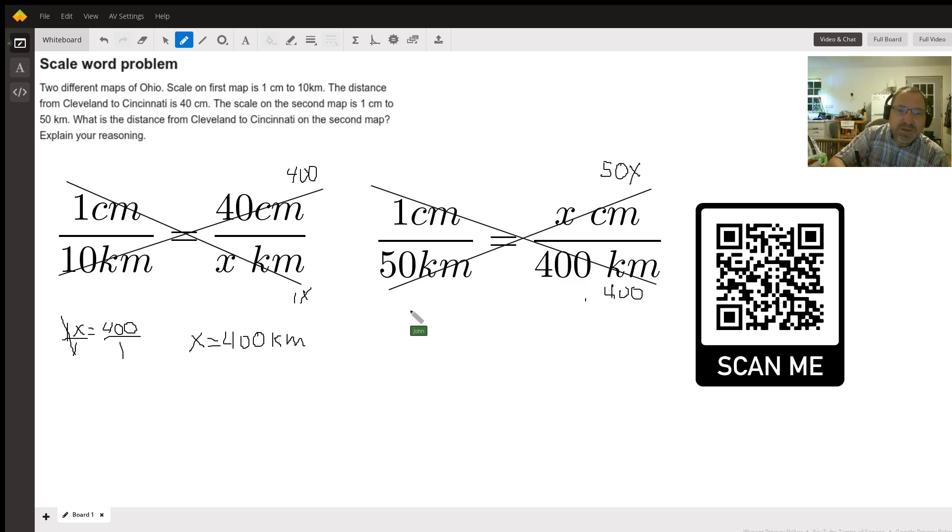If we set these equal to each other just like we did before, 50x equals 400. We're going to divide both sides by 50 because the opposite of multiplying by 50 is dividing by 50. 50 divided by 50 cancels out and we're left with just x. 400 divided by 50 is 8. So on the second map, the distance is 8 centimeters.